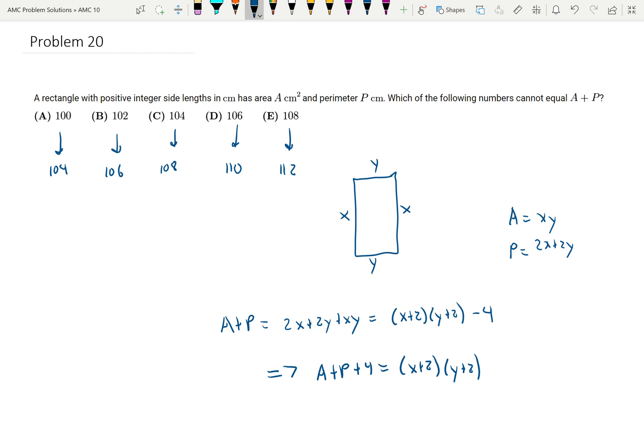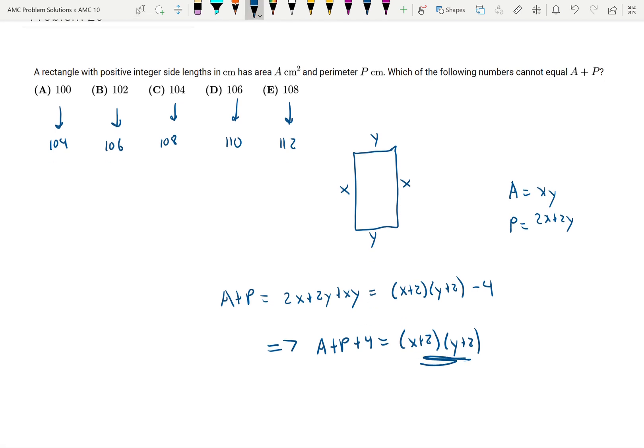If I can prove using this that one of those A plus P plus 4 can't equal one of these values, it's the same as proving A plus P can't equal any of these five values.